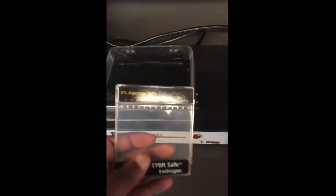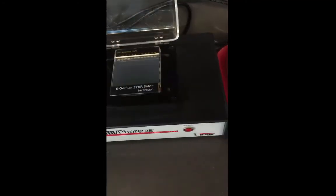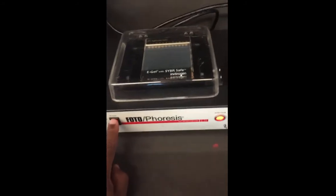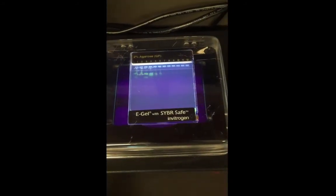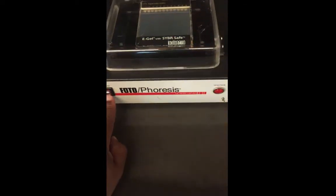So you put the E-Gel cartridge into the machine then you close the lid and you turn the switch on to expose the UV light and you can take a picture of your DNA bands there. Be careful not to stare into the light because UV light can be damaging to your eyes with long-term exposure.